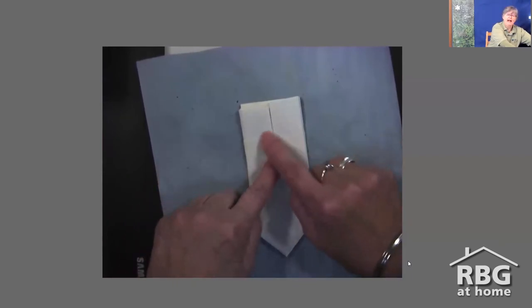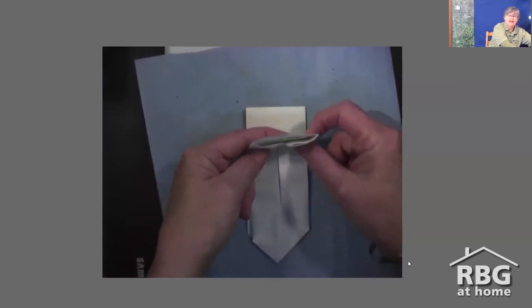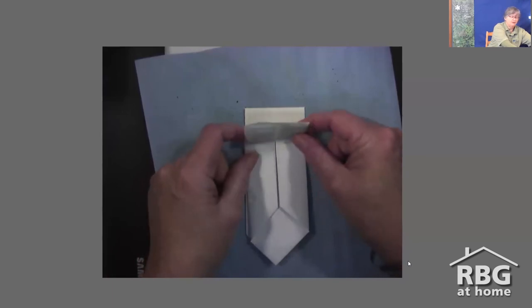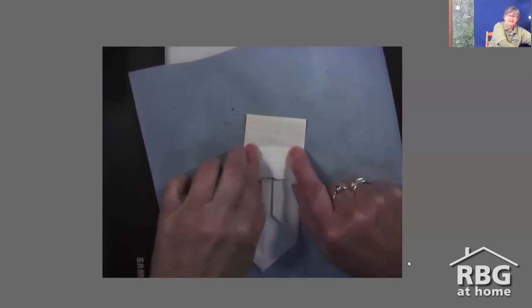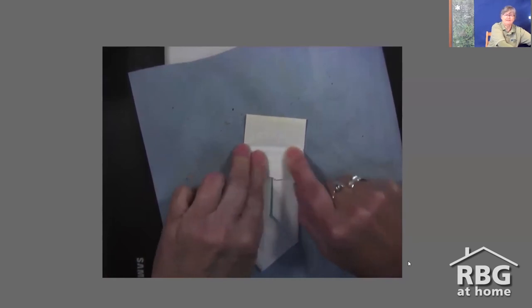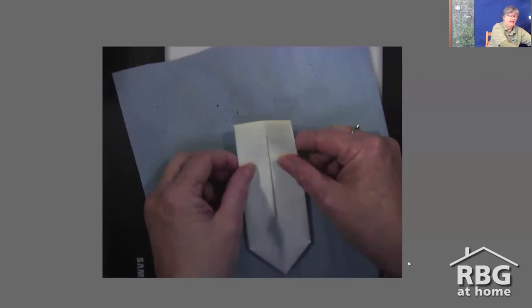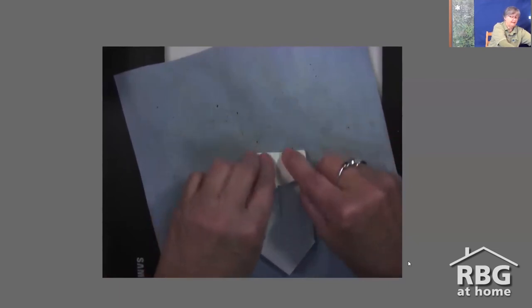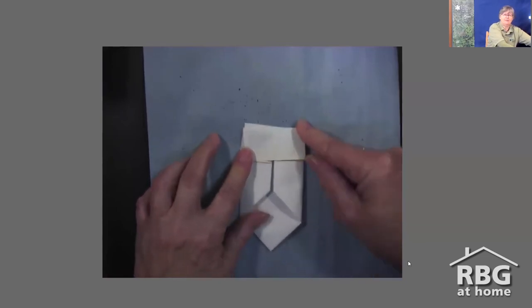At the top we have this little section, and you can just grab—you see how they're separate there? You can just grab this and fold it over, and press it down nice and strong. Press it down like that, turn it over, and do the same thing, pressing it down. We're almost there, we've almost got our plant pot.